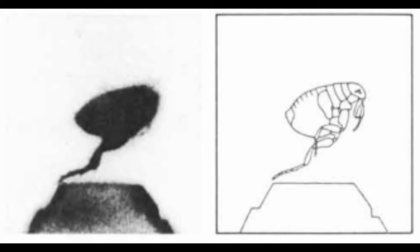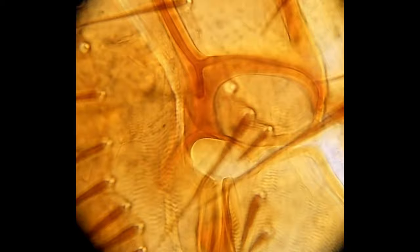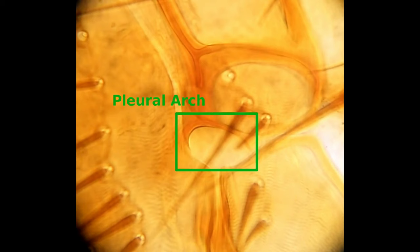But where is all this energy coming from? I'll show you something that looks quite unremarkable. This is the pleural arch, and it contains the material that powers the flea's jump. This material is a protein called resilin.